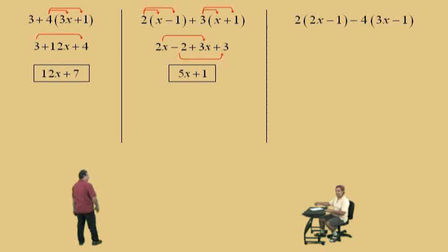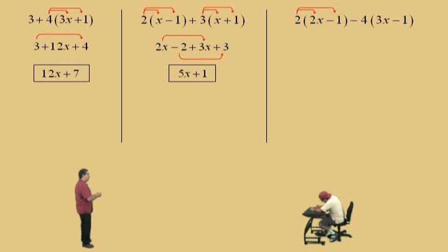Here we go, Charlie. Now, don't get scared. We're going to do the same procedure that we've been using. We're going to take the 2 times the 2x, and the 2 times the negative 1, and the negative 4 times the 3x, and the negative 4 times the negative 1.